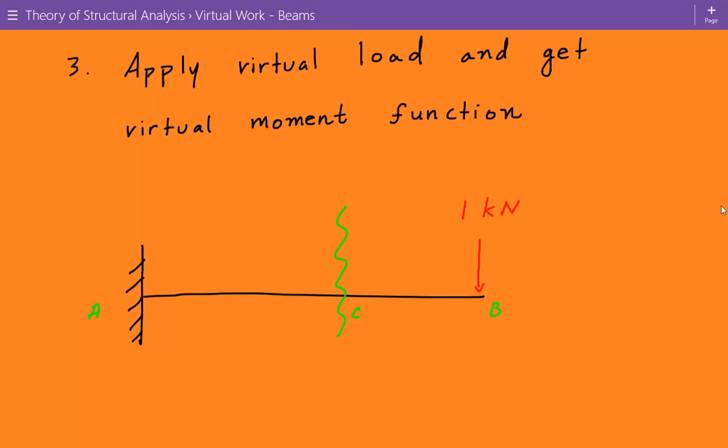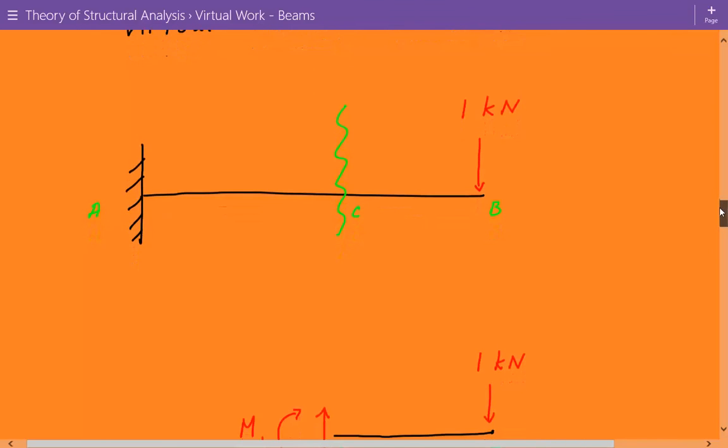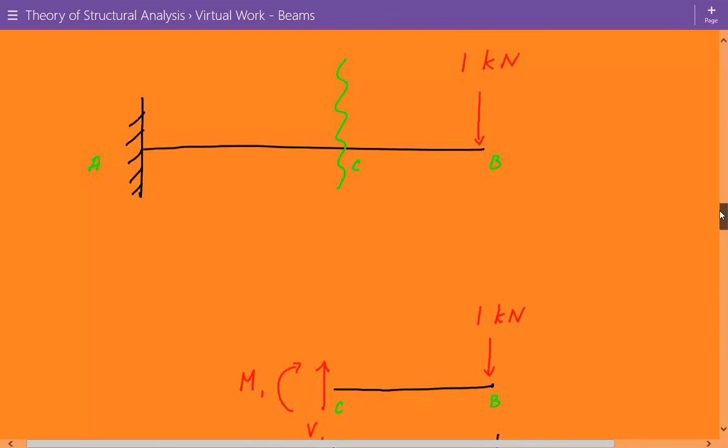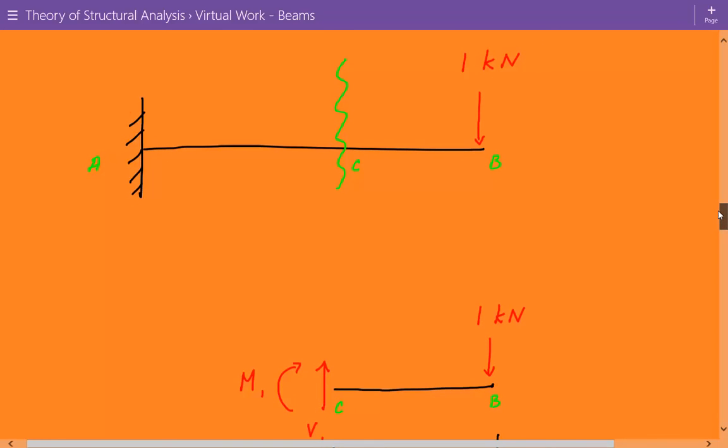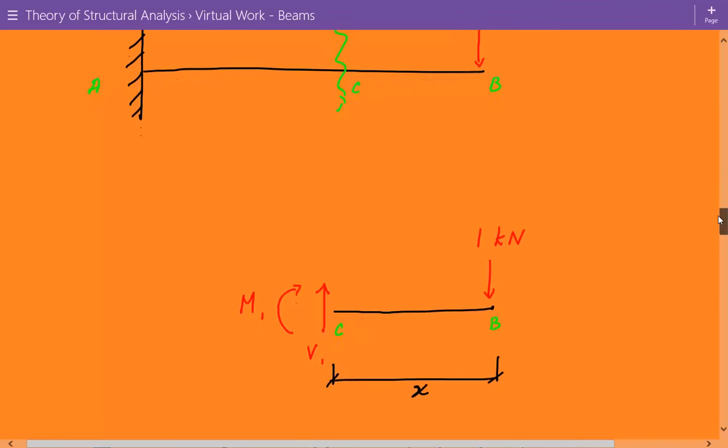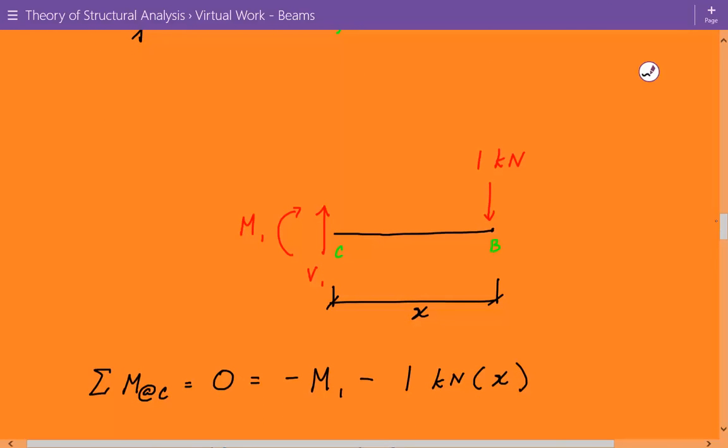So here's our cantilever beam. We've taken out the real loads and we've applied a virtual unit load at location B, which is where we want our displacement, where we want to calculate our displacement. We take a sectional cut at an arbitrary location, location C. So here's what we have. We have an internal virtual bending moment and shear as well. And we have this unit load. We should assume that this virtual moment also acts in a conventional positive direction.